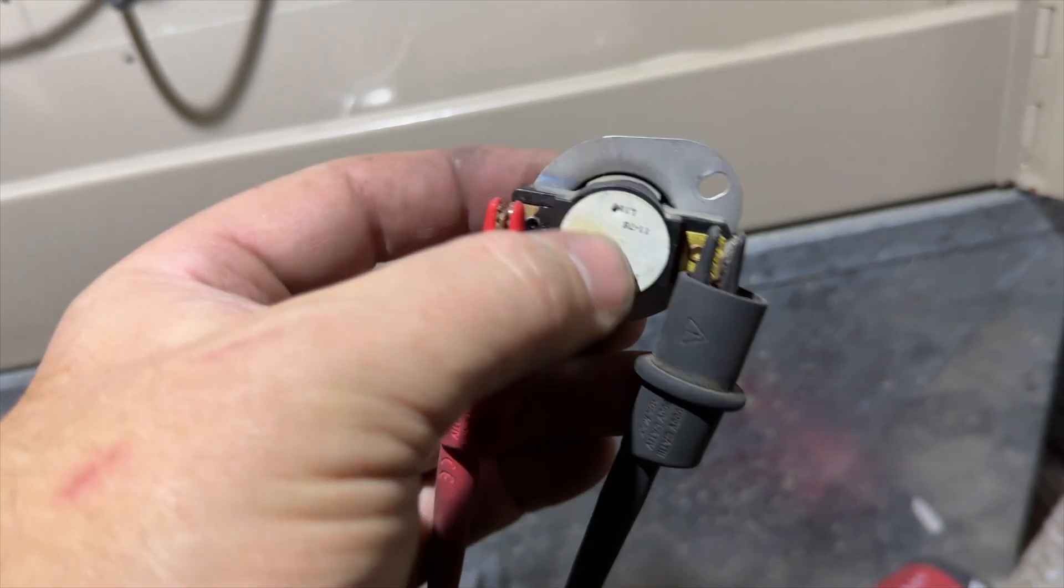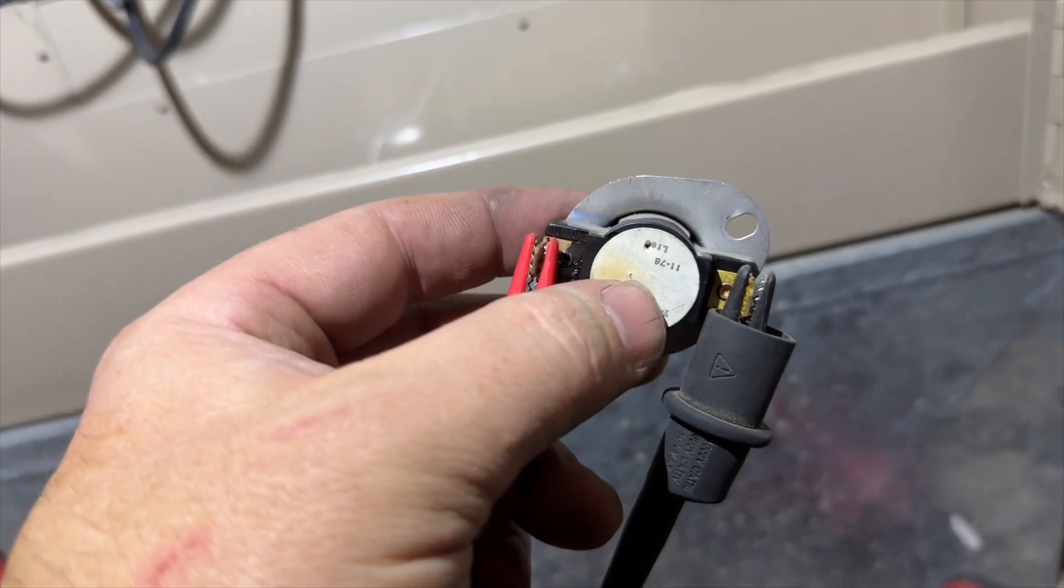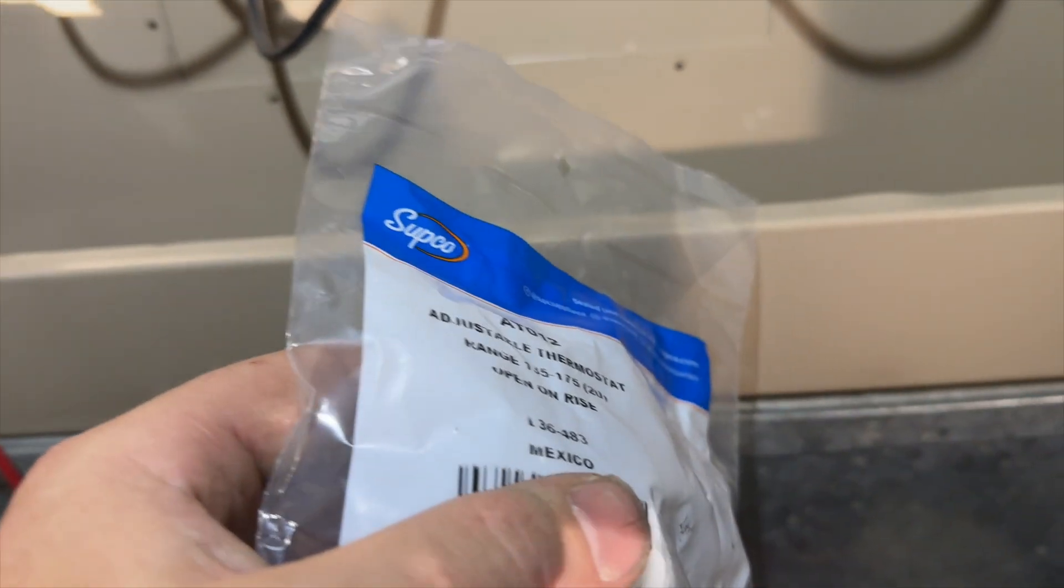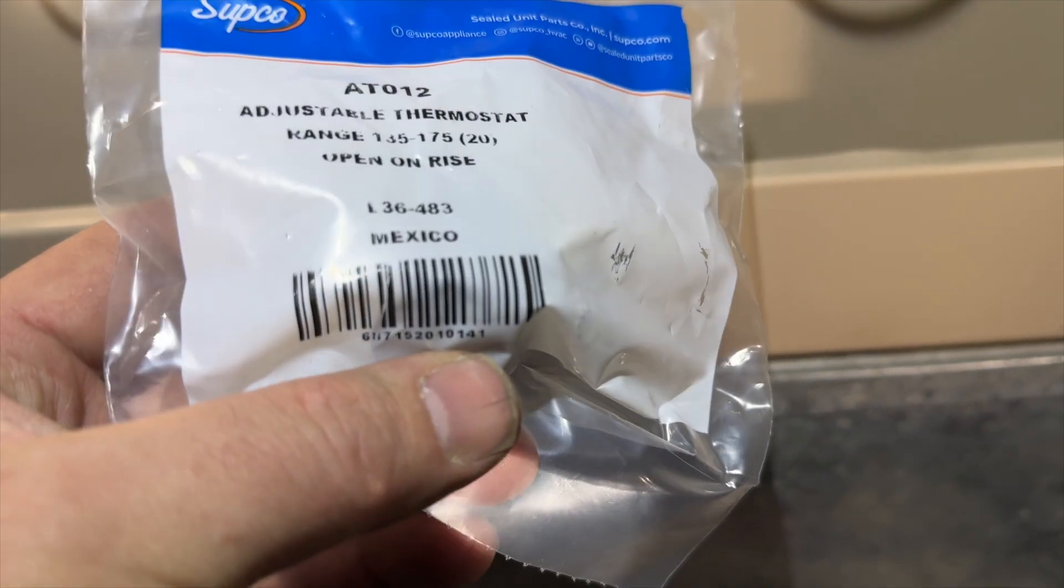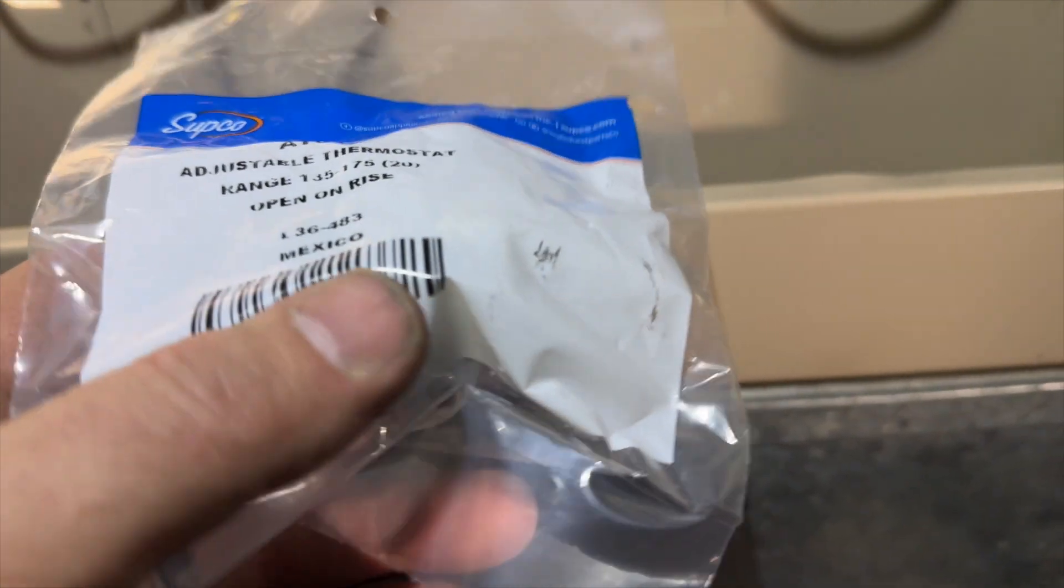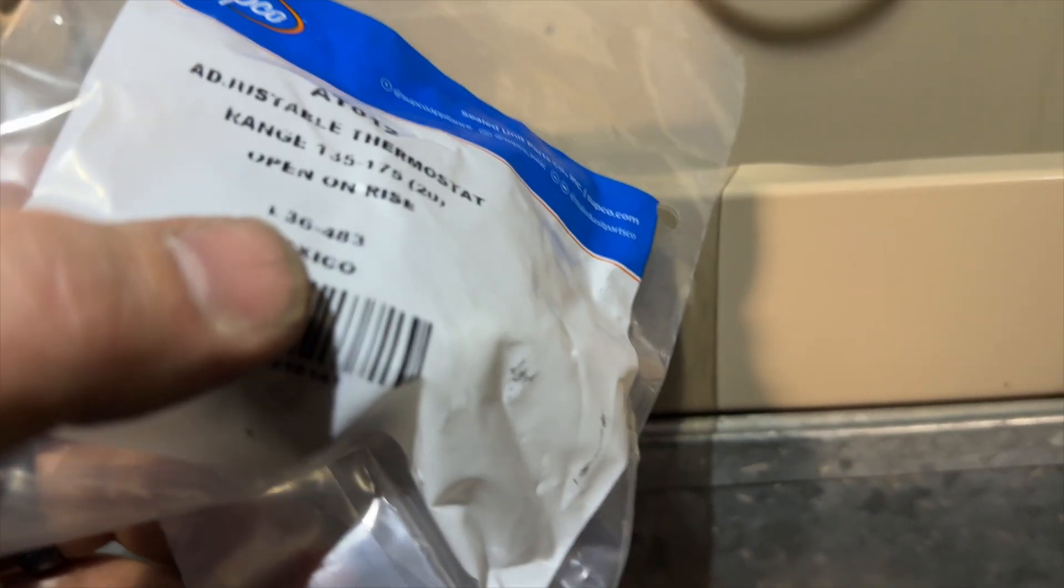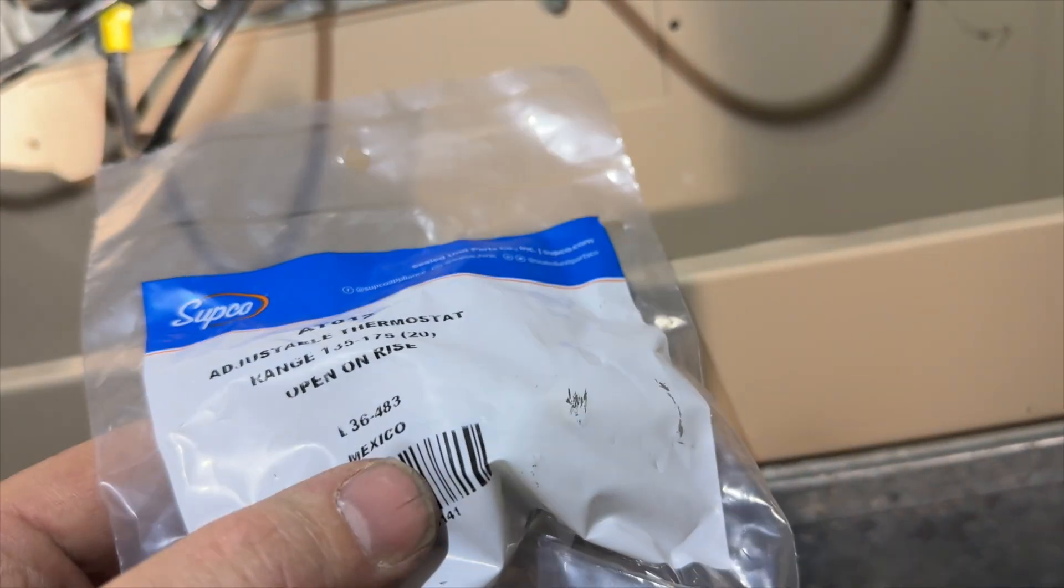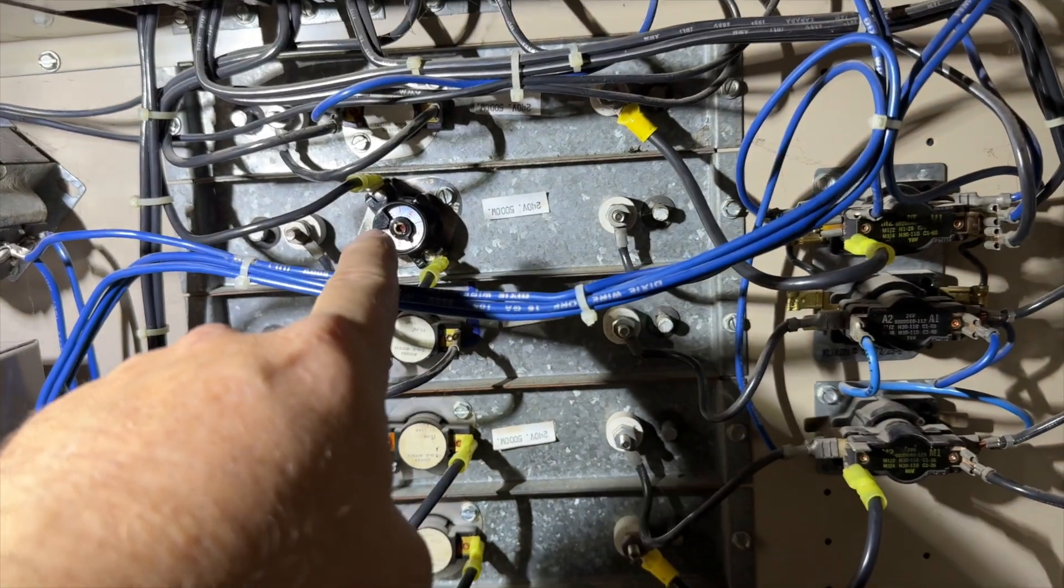So let me see if I have another one. Alright, we got this universal high limit switch. It's adjustable from 135 to 175. We need 160, I believe. Yep. And it resets at 20 degrees. Drainstone to the rescue. Let's go ahead and set this to 160.